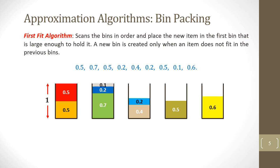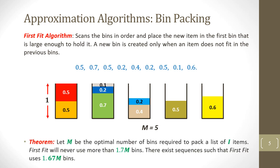In this problem, if we apply the First Fit algorithm we require five bins. It is better than the Next Fit algorithm but still not the optimal solution. There is a theorem that states: let m be the optimal number of bins. First Fit will never use more than 1.7m bins, and there exist sequences such that First Fit uses 1.67m bins. So the approximation ratio using First Fit is 1.7.